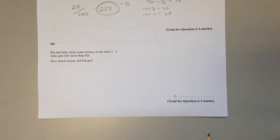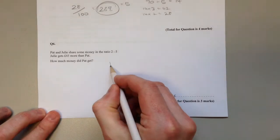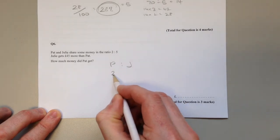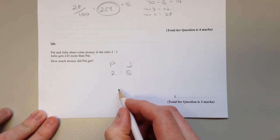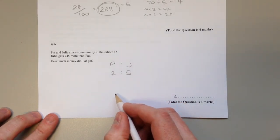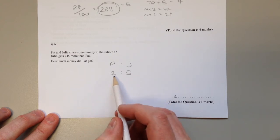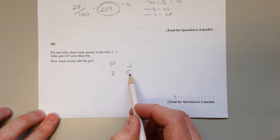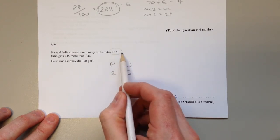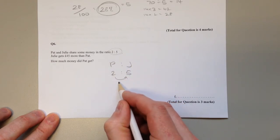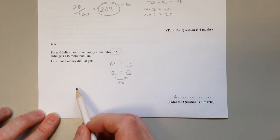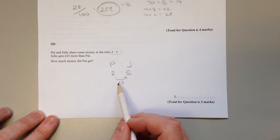Question 6. Again it's a share in the ratio, but it's slightly different. Pat and Julie share some money in the ratio 2 to 5. Julie gets 45 pounds more than Pat. Well, they could get 2 pounds and 5 pounds—that would be in the correct ratio. But it wouldn't have a difference of 45. It would only have a difference of 3.